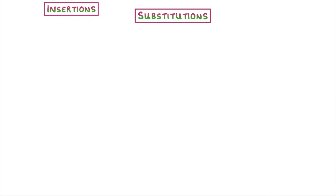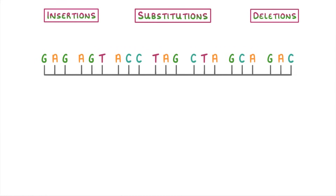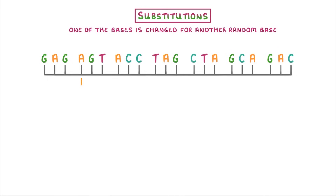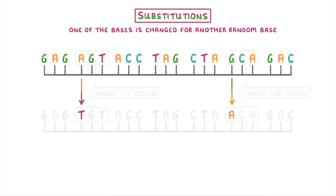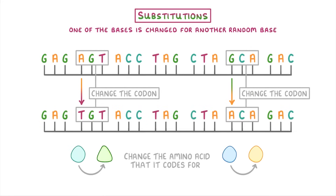The last thing we need to cover are the three specific types of mutations: substitutions, insertions, and deletions. A substitution mutation is when one of the bases is changed or substituted for another random base — like if this A changed to a T, or this G changed to an A. The problem with this is that it changes the codon that that base is in, and so could change the amino acid that it codes for.